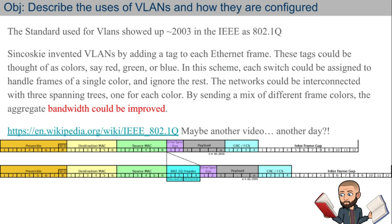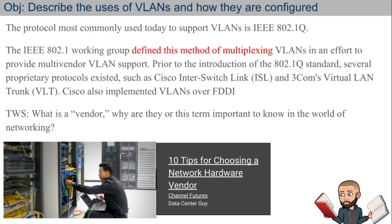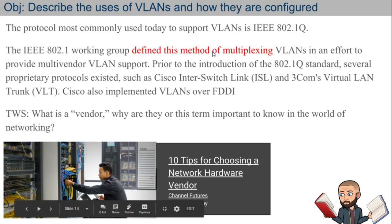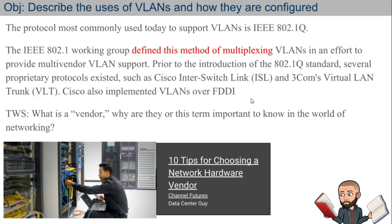Around 2003 we have the official standard 802.1Q, which is commonly used today to support VLANs. The IEEE working group defined this method of multiplexing in an effort to provide multi-vendor VLAN support — getting everyone on a common open standard rather than proprietary protocols. The other options would be Cisco's Inter-Switch Link (ISL) and 3Com's Virtual LAN Trunk. Cisco also implemented VLANs over FDDI, but that deserves its own video.